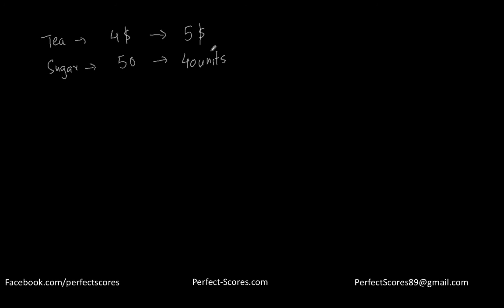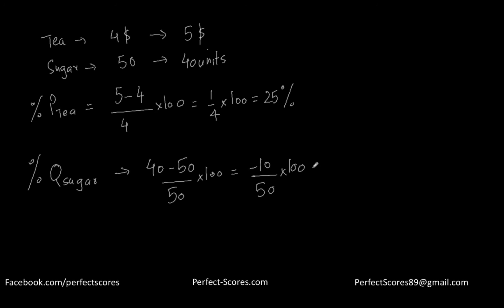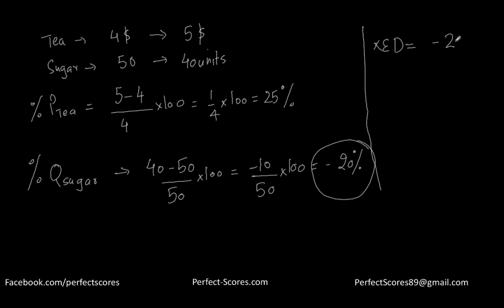The percentage change in the price of tea equals (final minus initial) divided by initial, times 100 — that is 1 over 4 times 100, which equals 25%. The percentage change in quantity demanded for sugar equals (40 minus 50) over 50 times 100, which equals negative 20%. Therefore XED equals negative 20 divided by 25, which equals negative 0.8.